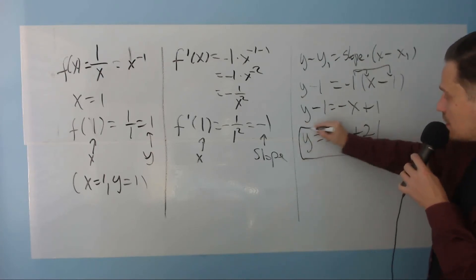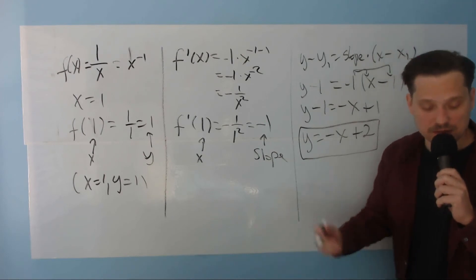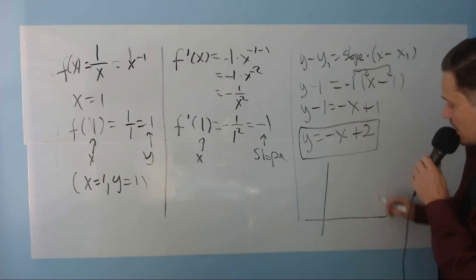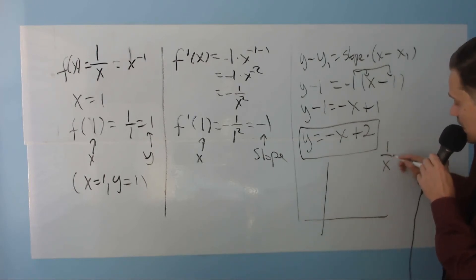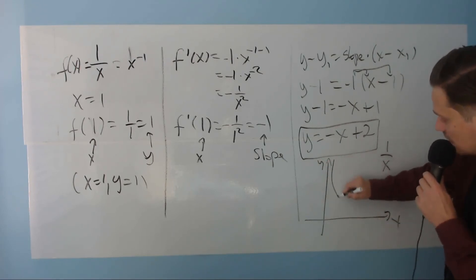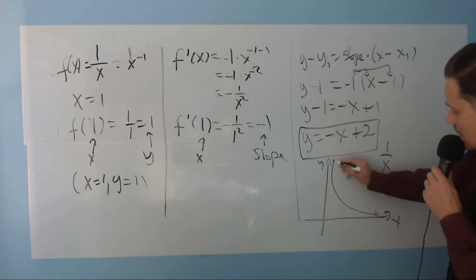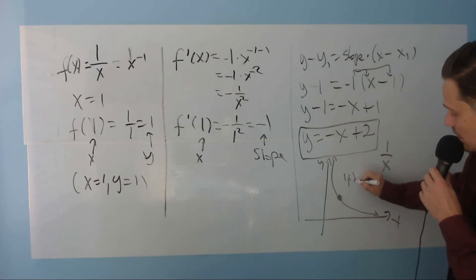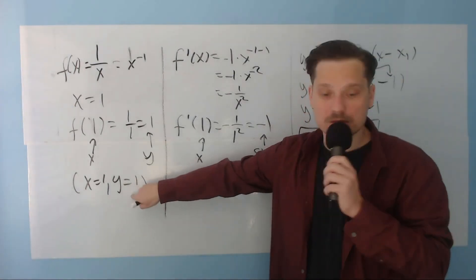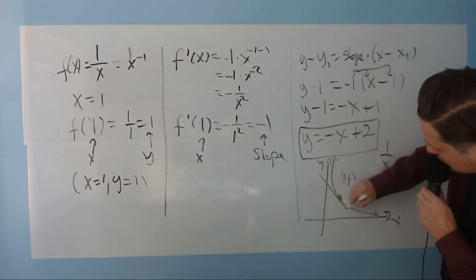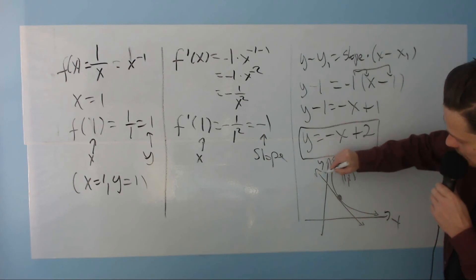And this is the equation of the tangent line. Sometimes people ask you to sketch a picture. You graph 1 over x, mark the y-axis and x-axis, and plot the point of interest at coordinates 1, 1 — coming from x equals 1, y equals 1. Then you sketch the tangent line touching the curve at that one point.